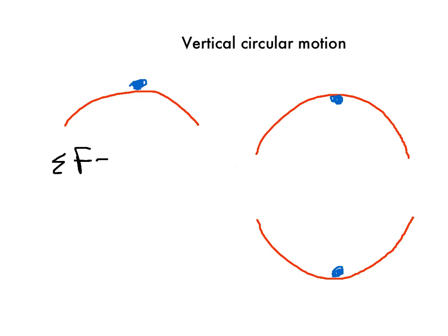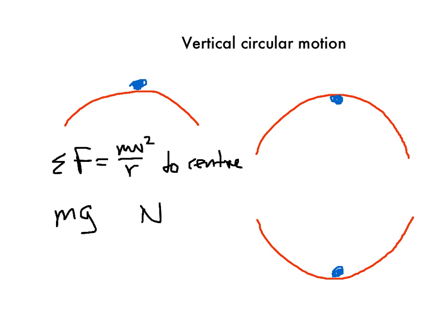We're going to be dealing with the net force, worth remembering that it's equal to mv squared on R, and it's always towards the centre of the circular motion. We're going to be adding together two forces — the weight force and the normal reaction force — and they're going to be combining to give our net force. That's the general pattern of these three situations.